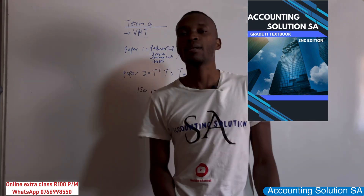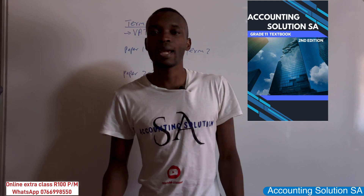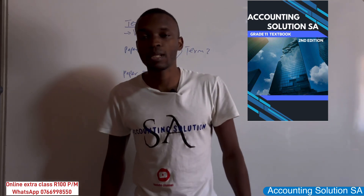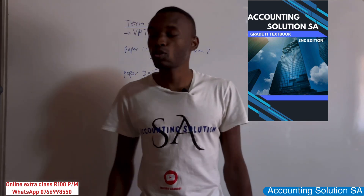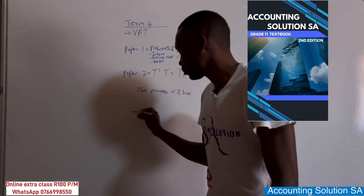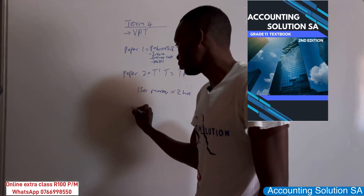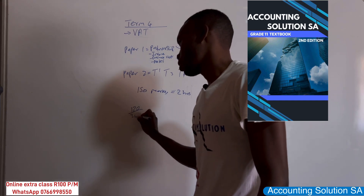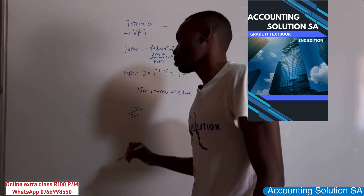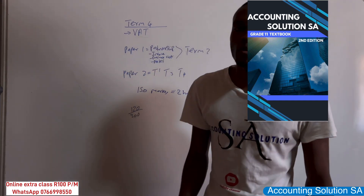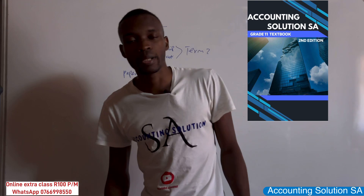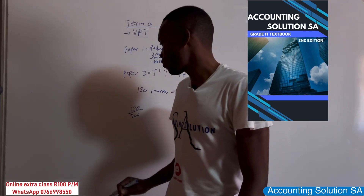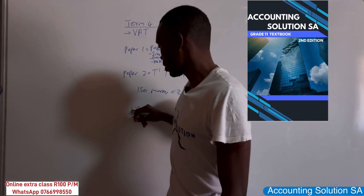If you combine both papers and get 90, that is only 30%, which is not good. You are expected to get at least 120 out of 300 in order to get 40%. If you are looking for 50%, you must get 150 in total.